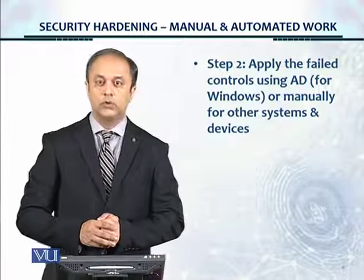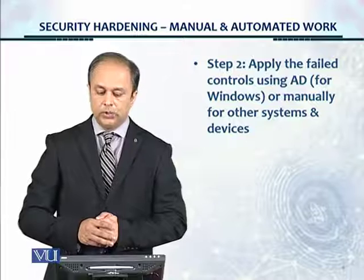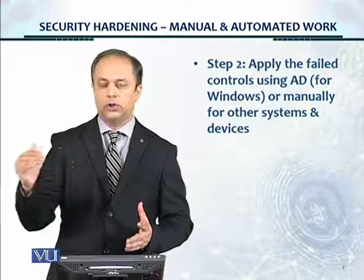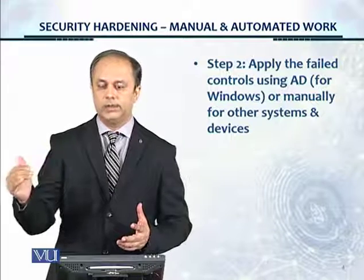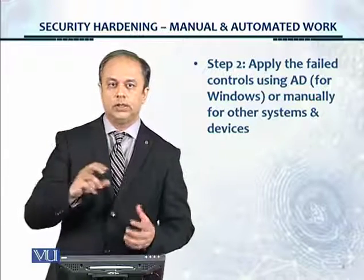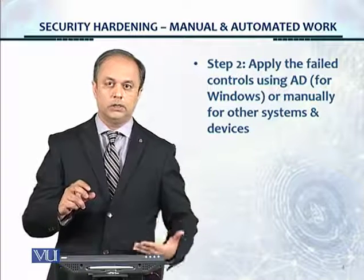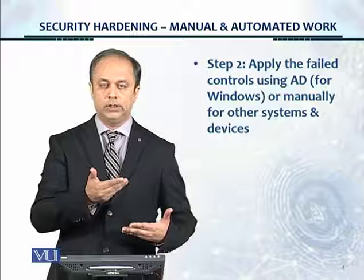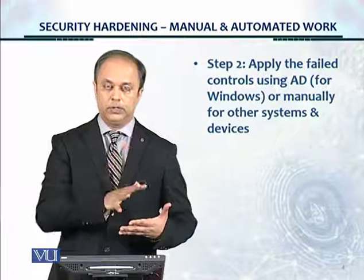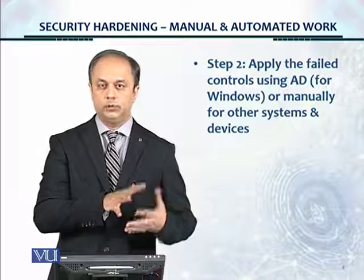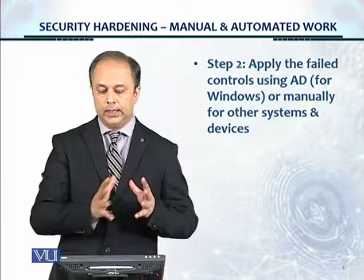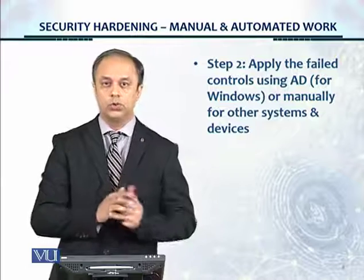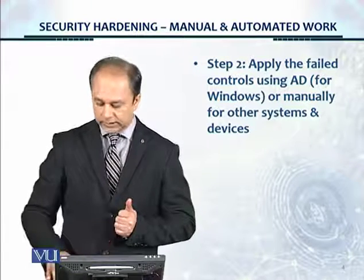Step two: apply the failed controls using Active Directory for Windows, or manually for other systems and devices. You are now applying the control you identified — for example, control number 87 found via the Qualys or Nessus compliance scan was showing as fail — so you pick up that section from the security benchmark and implement that control using the administration interface. This is step two: fixing controls that were showing failed status.